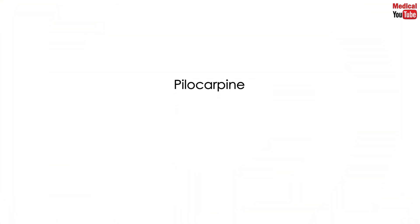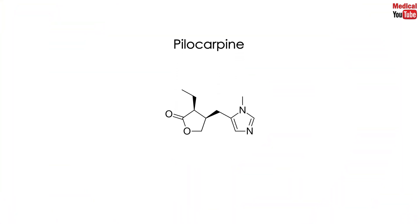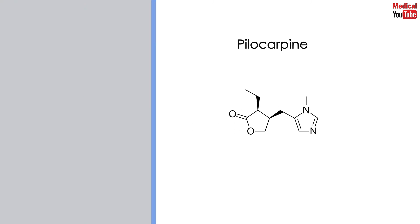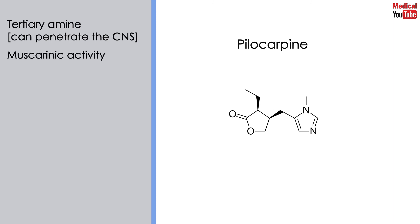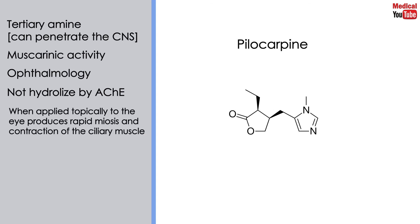The final drug we'll talk about in the direct-acting cholinergic drugs is pilocarpine. The alkaloid pilocarpine is a tertiary amine, and that means it can penetrate the CNS. It exhibits muscarinic activity and is used primarily in ophthalmology. It is not hydrolyzed by acetylcholinesterase. Applied topically to the eye, pilocarpine produces rapid miosis and contraction of the ciliary muscle.